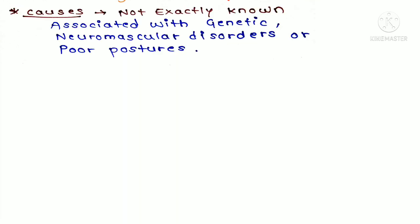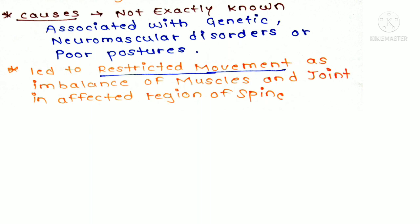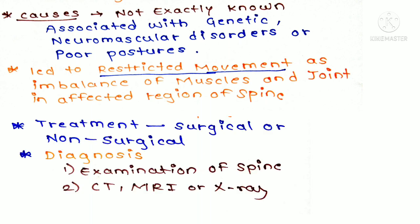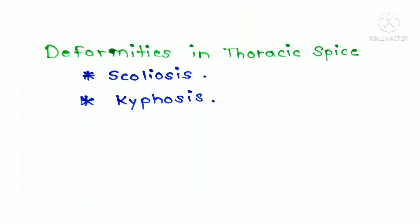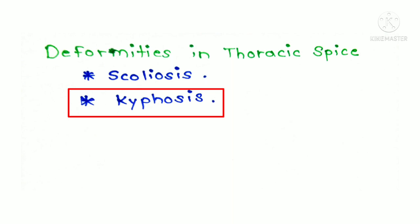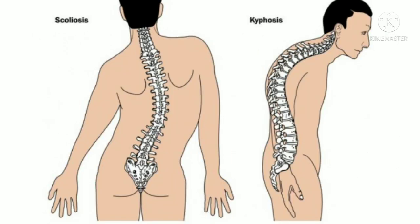The cause of scoliosis is unknown but can be associated with genetics, neuromuscular disorders, or poor posture. It results in pain and restricted movement due to muscle imbalance and joint involvement. Treatment can be non-surgical or surgical. Diagnosis is based on examination of the spine or imaging tests such as X-ray, MRI, or CT scan.